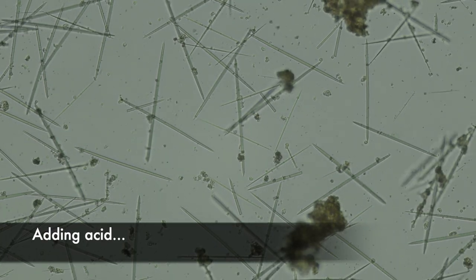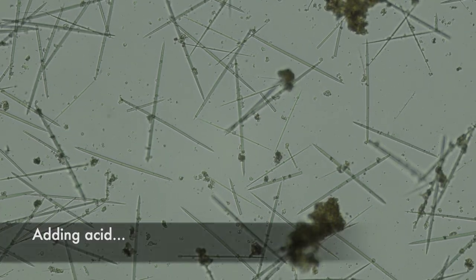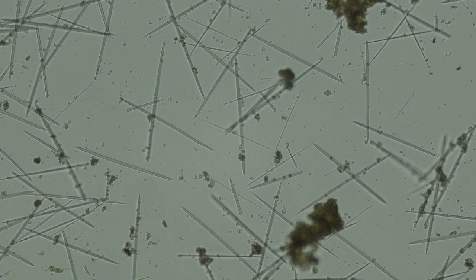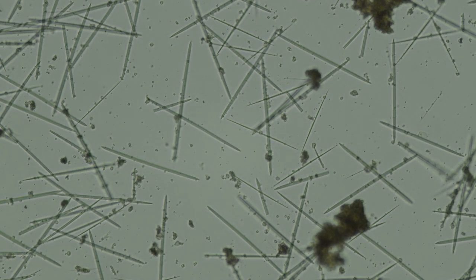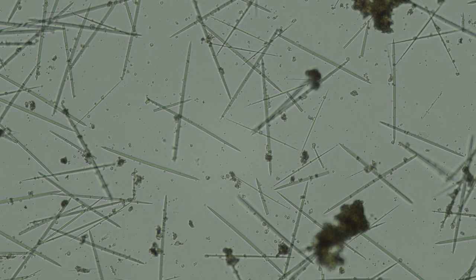The previous three sponges all had calcareous spicules, but the spicules of this yellow sponge, and those of the next two species, do not dissolve in acid, so they must be siliceous spicules.